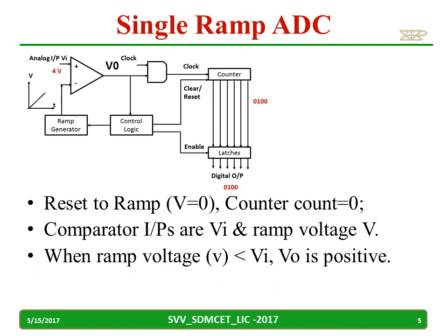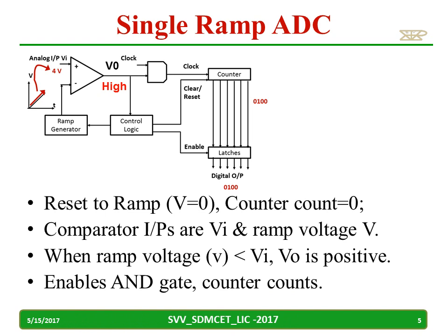When the ramp voltage is less than VI, the output of the comparator will be high. Whenever the comparator output is high, this enables the AND gate and the clock reaches the counter. The counter starts counting.